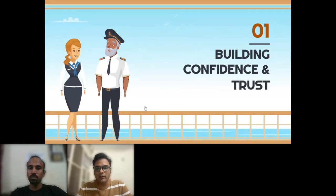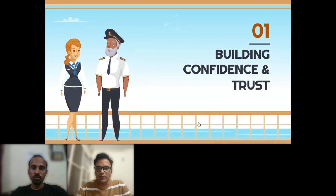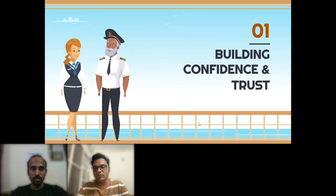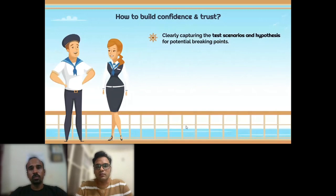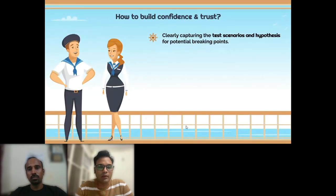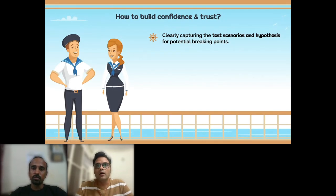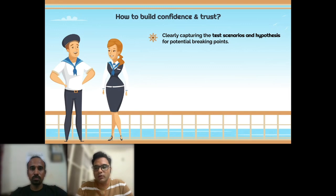Based on these common concerns, we'd like to touch on how in our current organization we were able to build confidence and trust and execute chaos engineering test cases in production. The first thing is to clearly capture test cases and hypotheses for potential breaking points. For example, on an OTT platform, there could be multiple UI platforms — iOS, Android, Roku — but the metadata service is the same, providing all metadata to the UI.